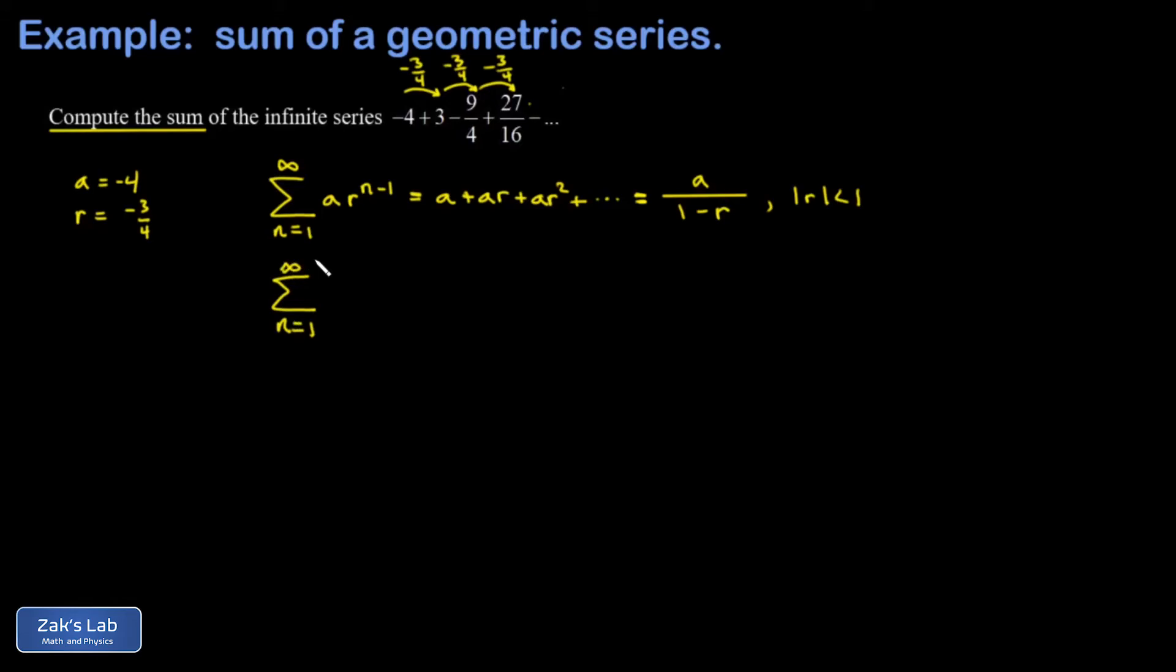So to be extra complete here, we're going to write our original series in sigma notation. Our a was negative 4 and our r is negative 3 fourths. And it's wise to do this just so we can double check that everything is working correctly. So if I sub in n equals 1, I get negative 4 times negative 3 fourths to the 0, which is just 1.